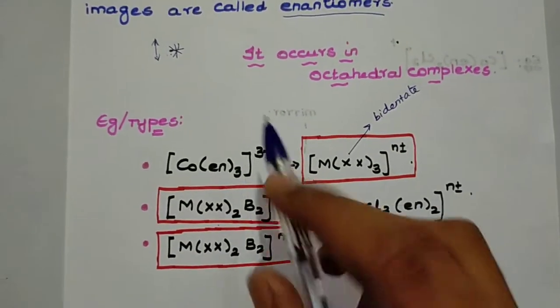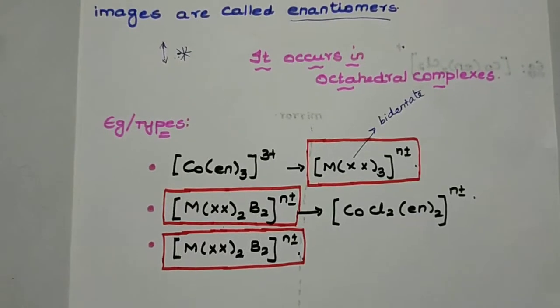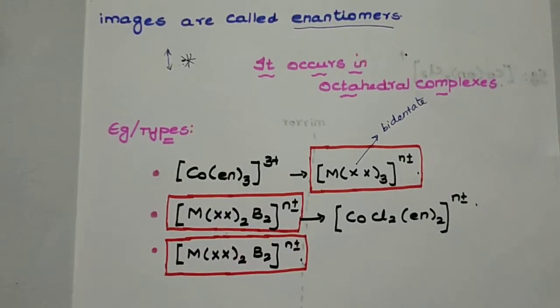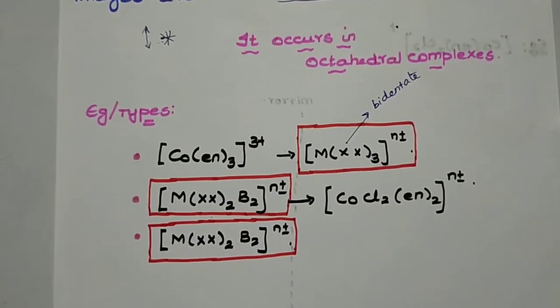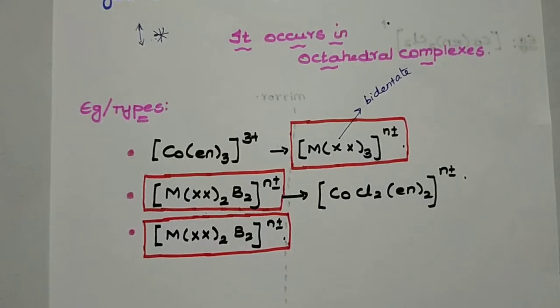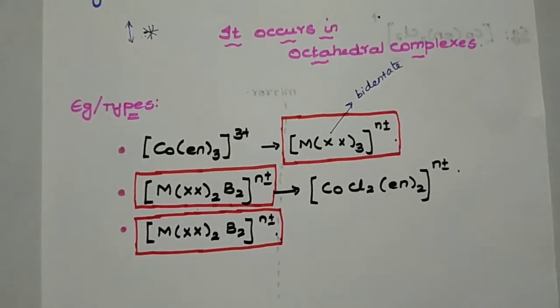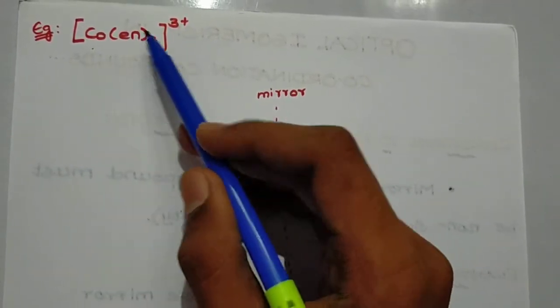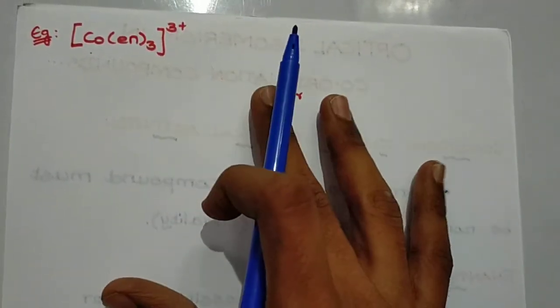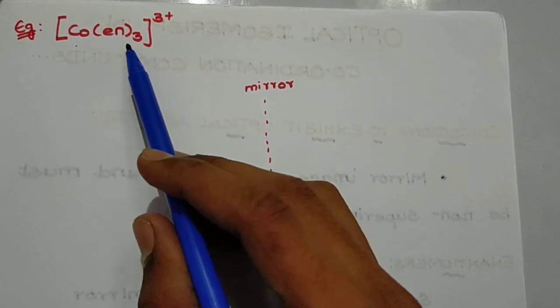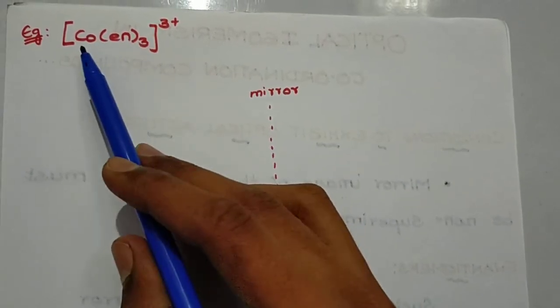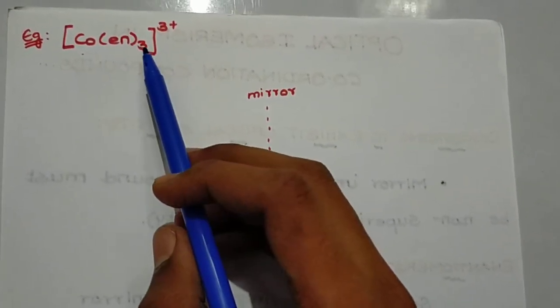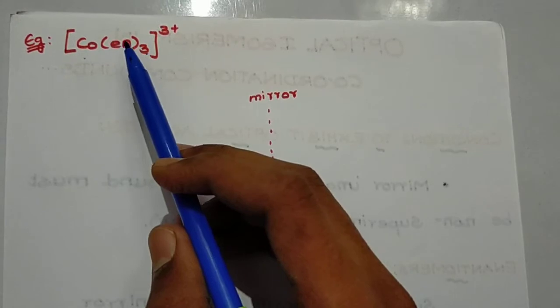A bidentate ligand has one ligand with two donor atoms attached to the central metal. Now our first example is [Co(en)₃]³⁺ — tris(ethane-1,2-diamine)cobalt(III), also written as tris(ethylenediamine)cobalt(III).